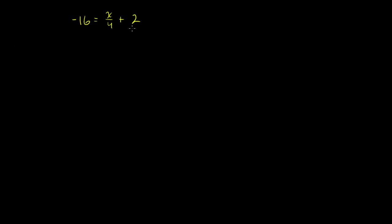The best way to get rid of that 2 is to subtract it. But if we want to subtract it from the right-hand side, we also have to subtract it from the left-hand side, because this is an equation. If this is equal to that, anything we do to that we also have to do to this. So let's subtract 2 from both sides.